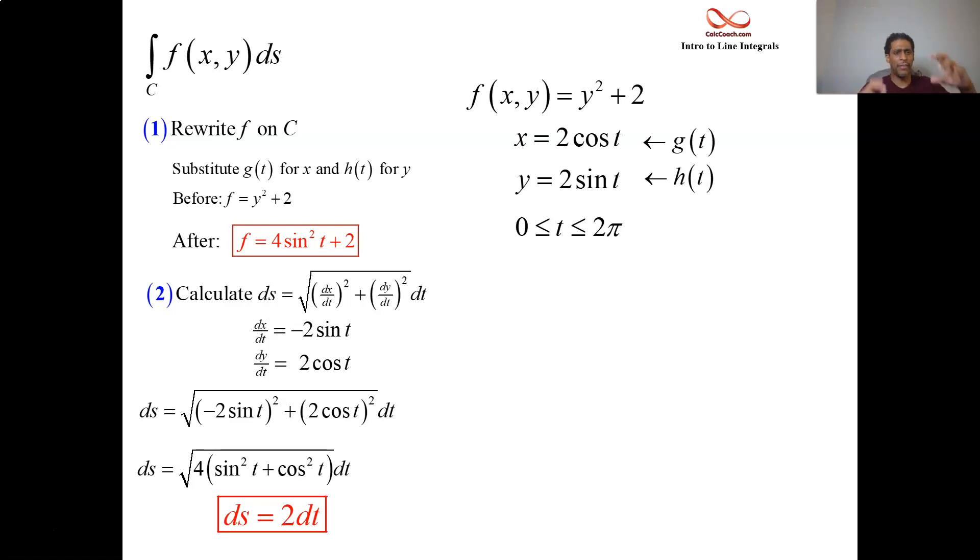What do we do with these two elements from the first bullet point and the second bullet point? Well, we put them together. In the third bullet point, we're going to write the integral as a single variable back to calc 1 integral of a single variable. That single variable is your parameter t. You know the bounds. It's a definite integral. We're going to get a number out of it. The bounds are the t bounds.